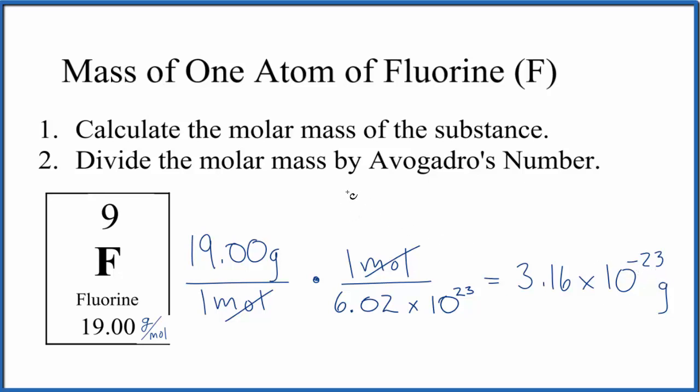Finally, if you were given an isotope of fluorine, say fluorine 18, instead of the 19.00 here, you would just put the 18 in, and that would give you the mass of one atom of the isotope fluorine 18. This is Dr. B with the mass of one atom, one single atom of fluorine, F. Thanks for watching.